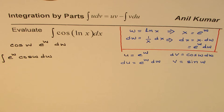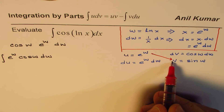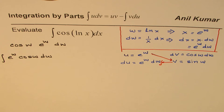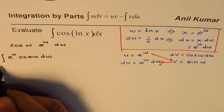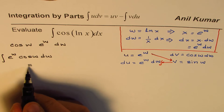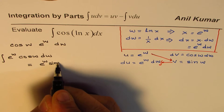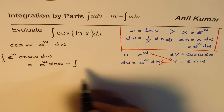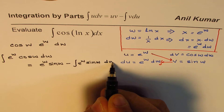Writing it as integration by parts — uv minus ∫v du — we get: ∫e^w cos(w) dw = e^w sin(w) − ∫e^w sin(w) dw. We have a similar integral remaining, but the idea now is that if we apply integration by parts once more, sin can be converted to cosine and the terms can be brought together.